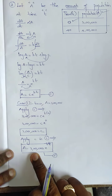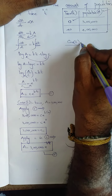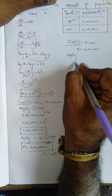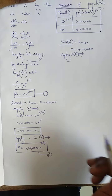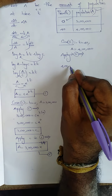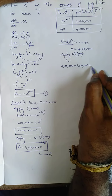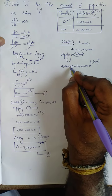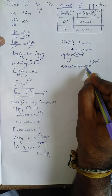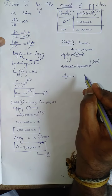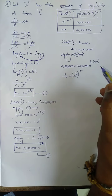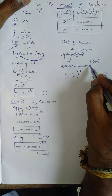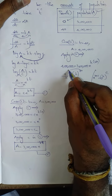Case 2: t = 40, A = 4 lakh. Apply in equation 2: 4 lakh = 3 lakh × e^(40k). Cancelling, 4/3 = e^(40k). I can write this as e^k = (4/3)^(1/40), using the rule that a^(b·c) = (a^b)^c, so 40 comes down and e^k = (4/3)^(1/40).